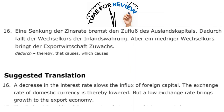The sixteenth sentence: 'Eine Senkung der Zinsrate bremst den Zufluss des Auslandskapitals.' 'Auslandskapitals' is a compound: 'Kapital' is capital, 'Land' is country, and 'Aus' means outside of, so this is foreign capital. 'Des Auslandskapitals' is genitive, and 'Fluss' relates to the word for river, so 'Zufluss' is the inflow. A decrease in interest rate slows the inflow of foreign capital. The rest of the sentence deals with similar economic topics around exchange rates and export growth.